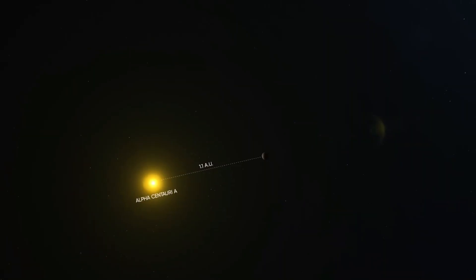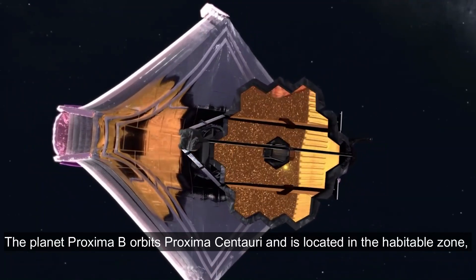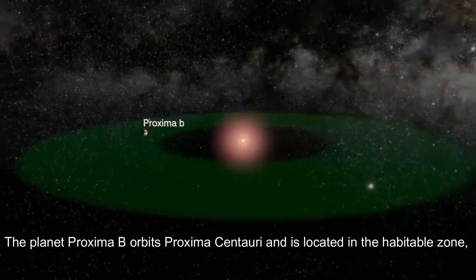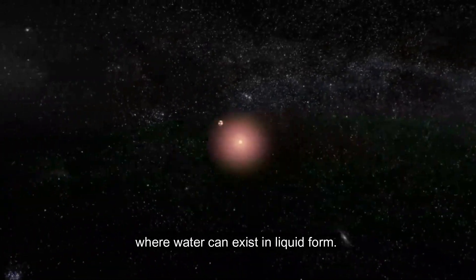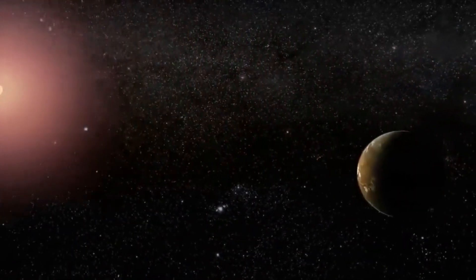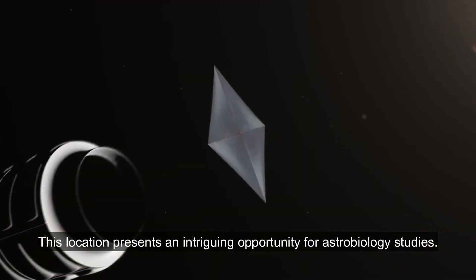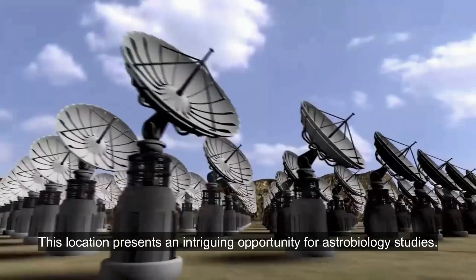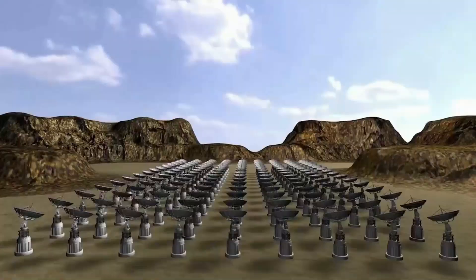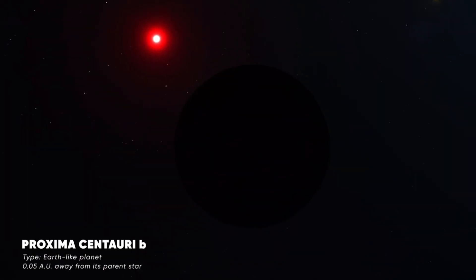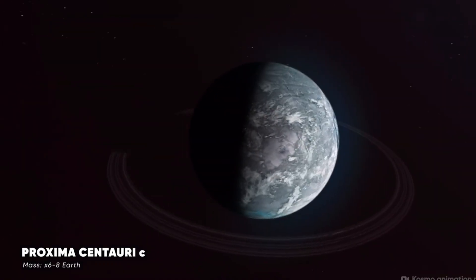The planet Proxima B orbits Proxima Centauri and is located in the habitable zone, where water can exist in liquid form. This location presents an intriguing opportunity for astrobiology studies. Thus far, three planets have been identified in the Proxima Centauri system.